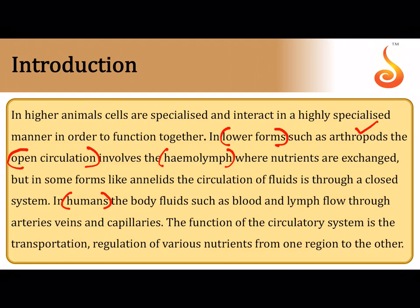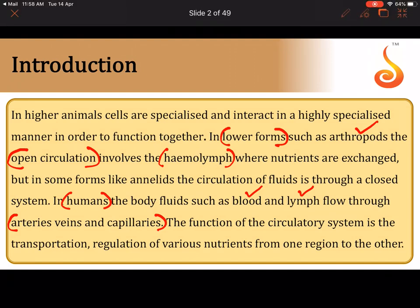In the human body, we have two types of body fluids: blood, which is red in color, and lymph, which is colorless. Blood in your body flows through closed channels referred to as arteries, veins, and capillaries. As a result, our circulatory system is called a closed type of circulatory system.